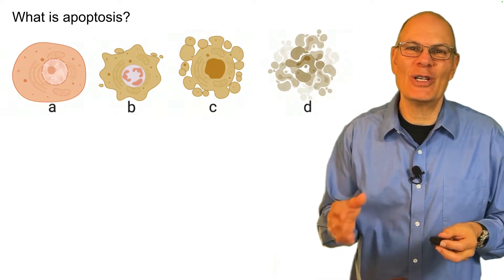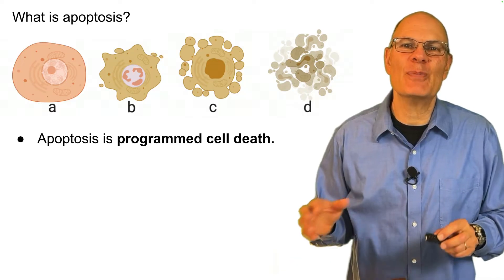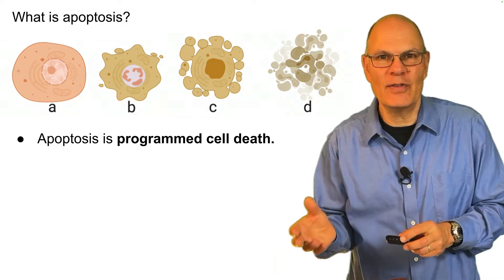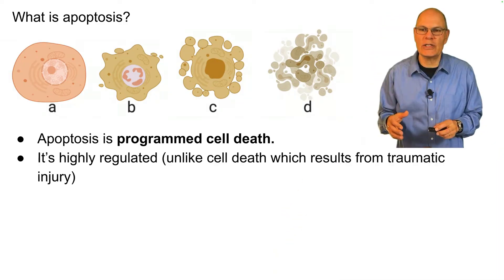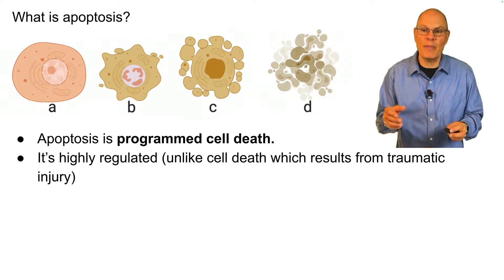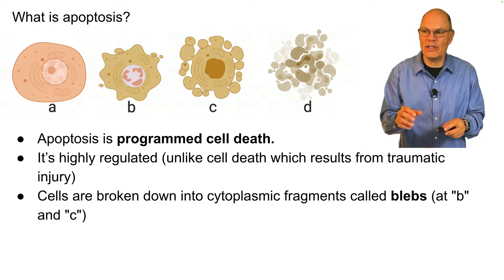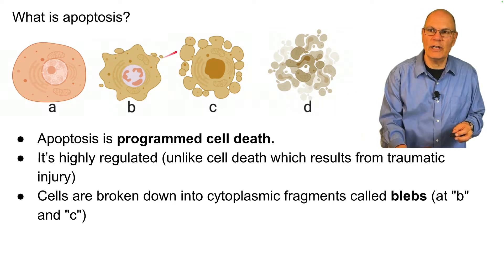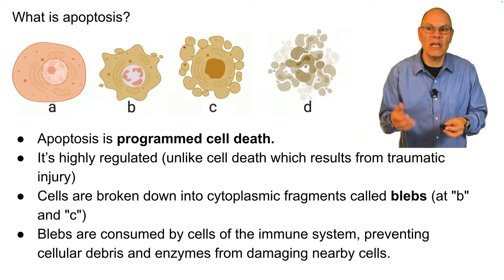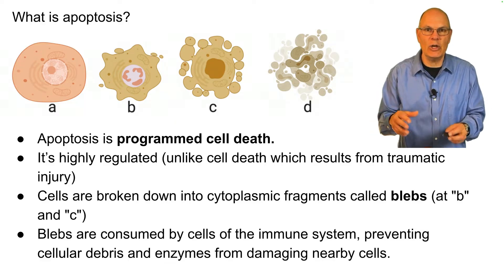Apoptosis is programmed cell death — note that the second P is silent. It's part of a signaling cascade that involves the mitochondria and the nucleus. It's highly regulated, which is very different from cell death that results from traumatic cell injury. Cells are broken down into cytoplasmic fragments called blebs, which are consumed by cells of the immune system, preventing cellular debris and enzymes from damaging nearby cells.